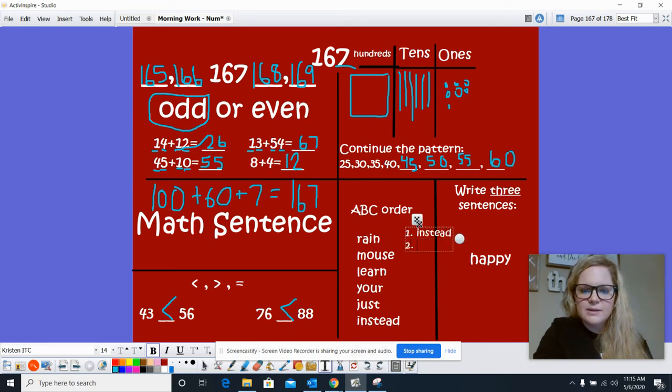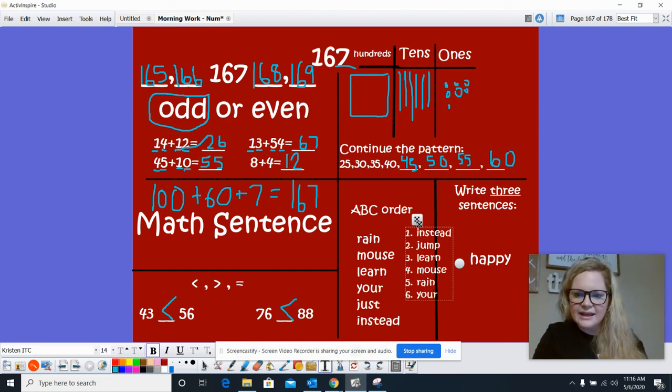And then 2 would be jump. 3 would be learn. 4 would be mouse. 5 would be rain. And 6 would be your. Very good.